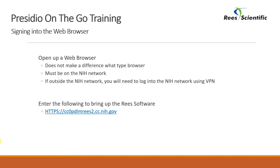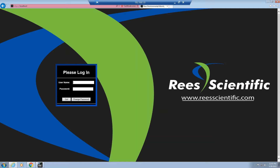Each customer site at the NIH will have their own individual web address to access the ReS system using Presidio on the Go. A sample address is on the screen, however you can contact your ReS administrator to get the web address for your node. After entering the web address the ReS Presidio on the Go logon will appear. You will need to enter your username and password to continue. If you do not have a username or password, or you've forgotten this information, you will need to contact your system administrator. Enter your username and password and hit go to log on to the system.